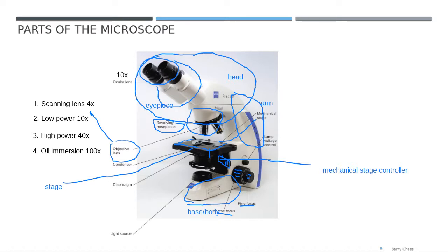The last part is the light source. This light microscope uses light as its source for transmission. There is also a very small knob called the diaphragm, which is used to open and close the light source. If you want brighter light, you open the diaphragm; if you want dimmer light, you close it.